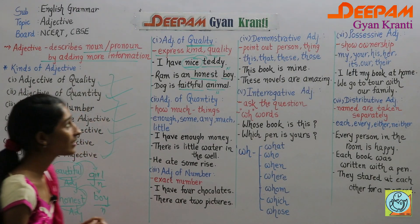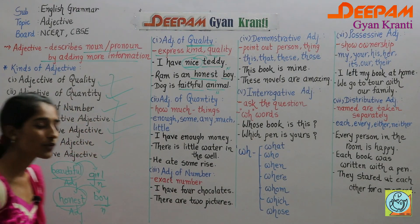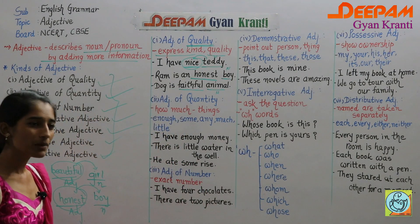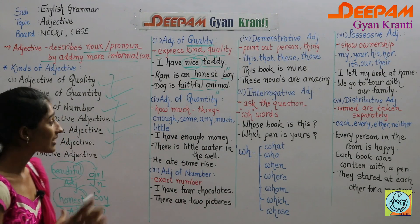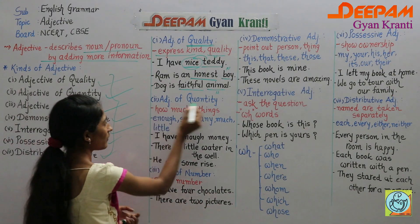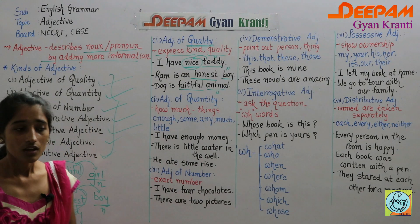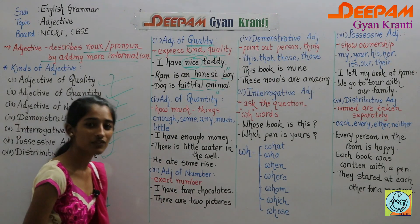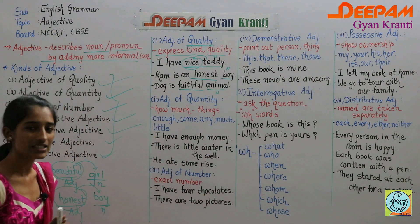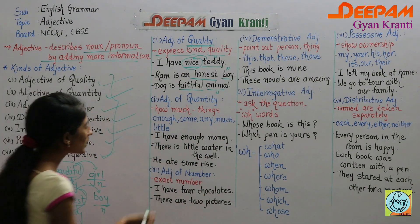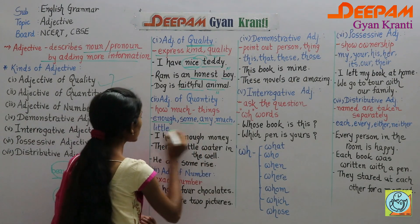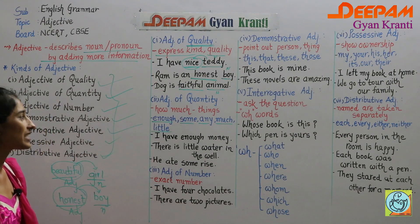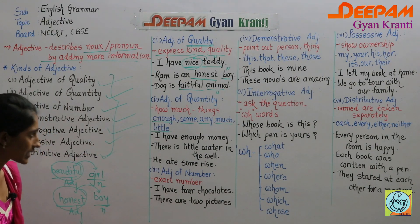Next is adjective of quantity. Quantity means how much of something there is, and that is shown by adjective of quantity. Certain keywords help you identify it: enough, some, any, much, and little. With the help of these words, you can easily find out that a sentence belongs to adjective of quantity.